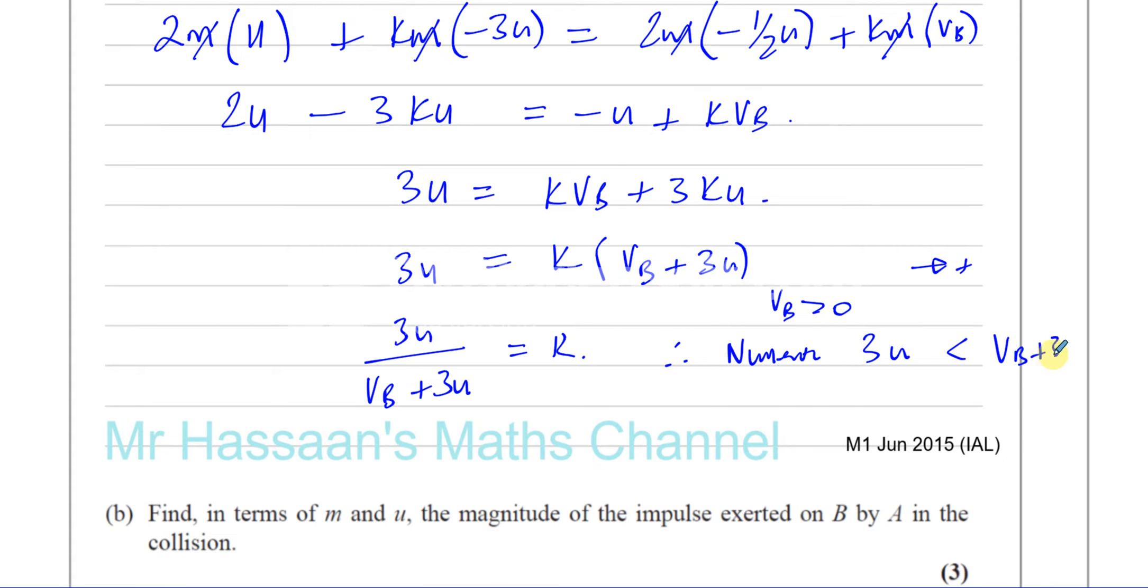This is the numerator and this is the denominator. Now, if the numerator is less than the denominator, therefore 3U over VB plus 3U.